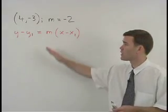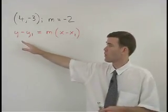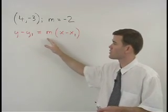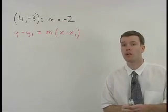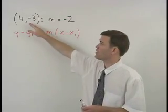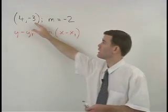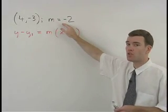So let's use the point slope formula, y minus y1 equals m times x minus x1, to write the equation of the line that passes through the point 4 negative 3 and has a slope of negative 2.